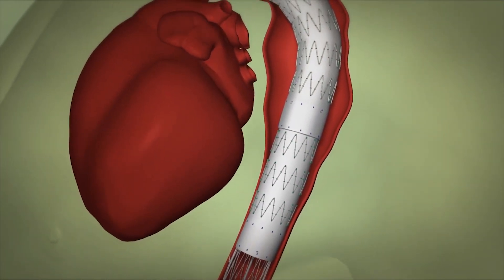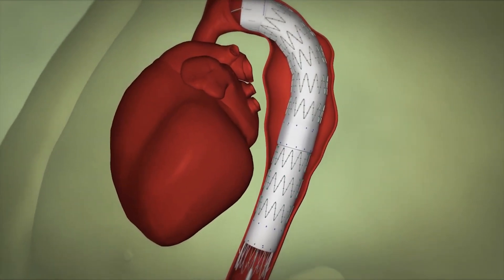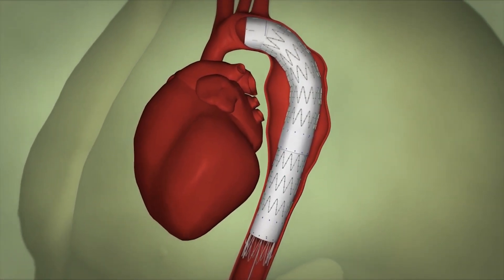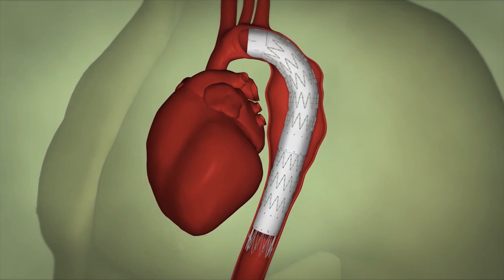At this point we use contrast and fluoroscopy again to make sure that the repair is complete and that there are no leaks into the aneurysm around the graft.